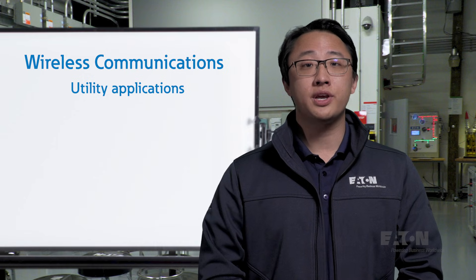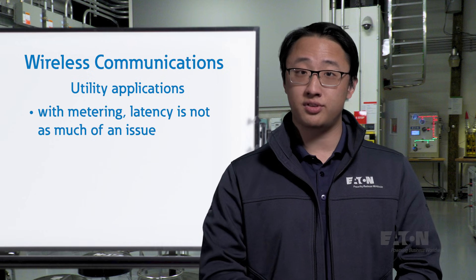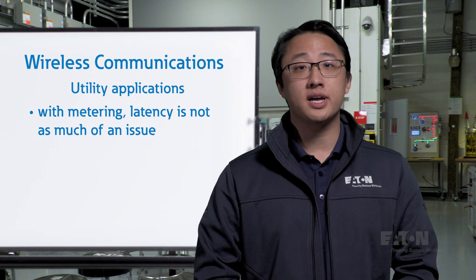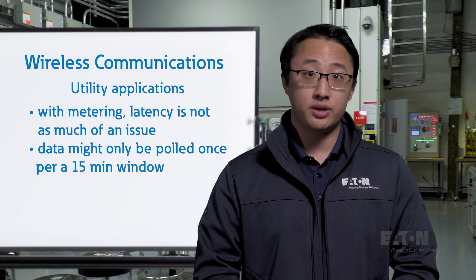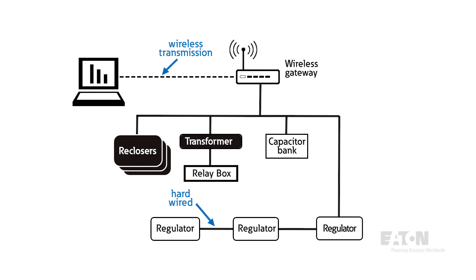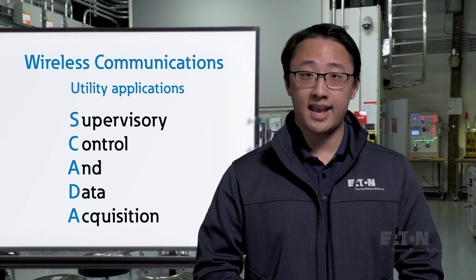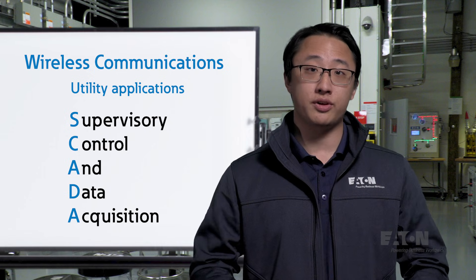Utility communications are more focused on metering, leaving device-level automation to handle any system faults. This means that latency isn't as much of an issue, and oftentimes demand data may only be pulled once per 15-minute window. For actual system automation, sites will use local wired communications to ensure that nothing goes wrong, and wireless communications can be reserved for remote monitoring. These are core concepts in Supervisory Control and Data Acquisition, or SCADA schemes, in which one site oversees a large network of others.